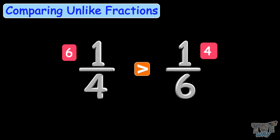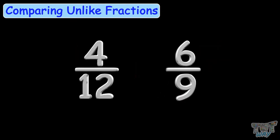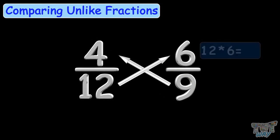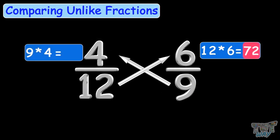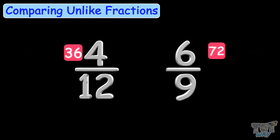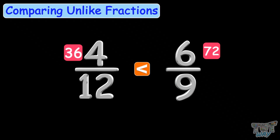Here we have another pair of unlike fractions: 4 by 12 and 6 by 9. 12 multiplied by 6 equals 72, and 9 multiplied by 4 equals 36. You got a bigger product on this side, so 6 by 9 is the bigger fraction out of these two unlike fractions.